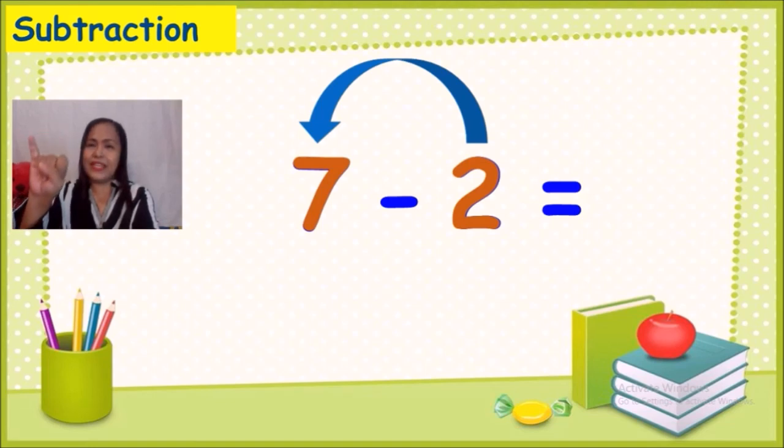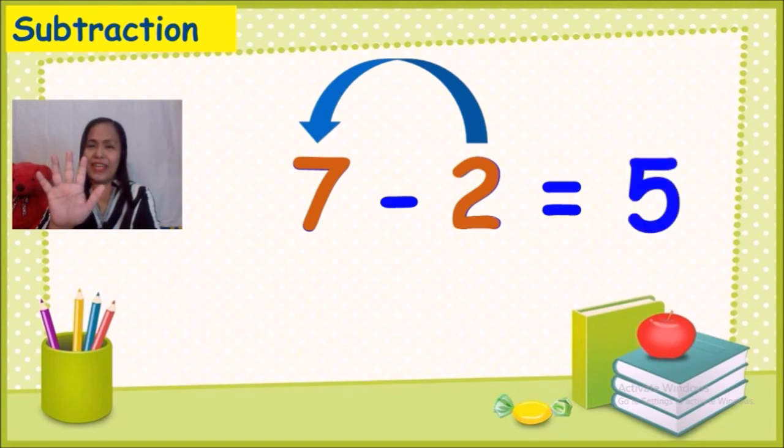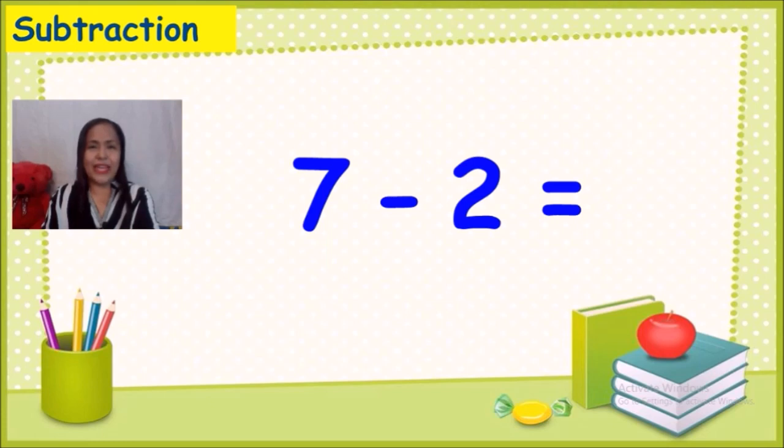Two, three, four, five, six, seven. How many numbers do I have? Okay, correct. Five. Seven minus two equals five.